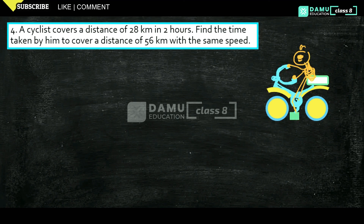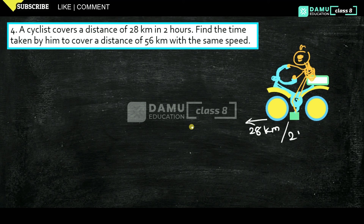Hello viewers, thanks for watching our videos. If not yet subscribed, please subscribe and hit the bell icon. In this module, we are going to discuss: a cyclist covers a distance of 28 kilometres in 2 hours. Find the time taken by him to cover a distance of 56 kilometres at the same speed.